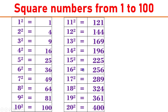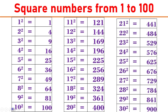16 square equals 256. 17 square equals 289. 18 square equals 324. 19 square equals 361. 20 square equals 400. 21 square equals 441.